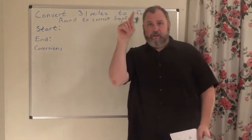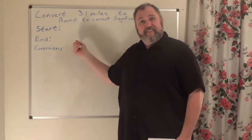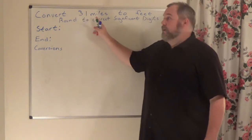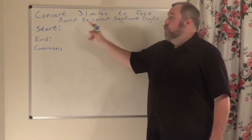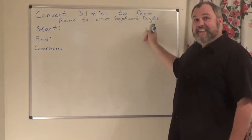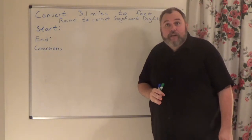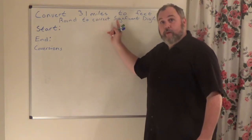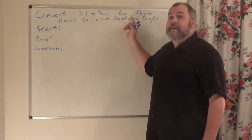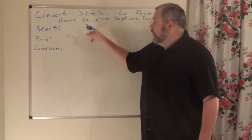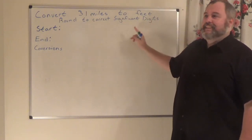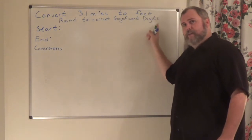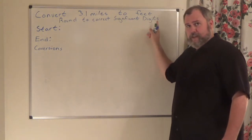The very first problem says: convert 3.1 miles to feet, round to the correct significant digit. That is the problem that you need to be writing down in number one. This last sentence — round to correct significant digit — is going to be a big thing when you start doing your homework and your test.